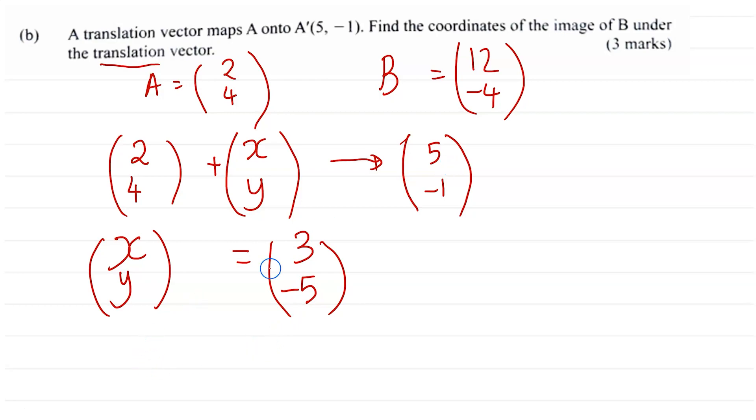And then the last part we need to find what the image of B will be under this vector. So B we know is (12, -4) and if we apply this translation (3, -5) we're just going to add it. Where will this end up guys?